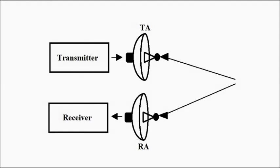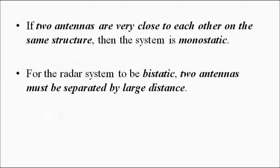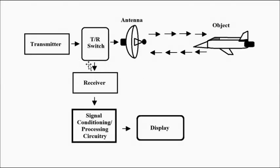Another factor that distinguishes monostatic from bi-static radar is the separation distance between the two antennas. If two separate antennas are present but the separation distance between them is very small and they are located on the same structure, it is still called a monostatic configuration. For a radar to be called bi-static, it must have two separate antennas separated by a very large distance. In monostatic configuration, the transmitter-receiver switch comes into play.